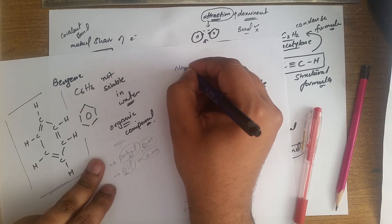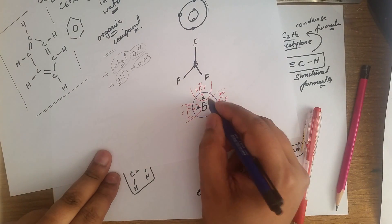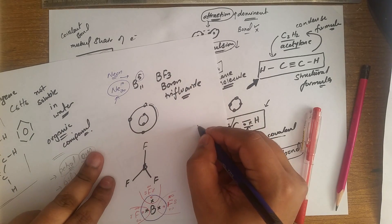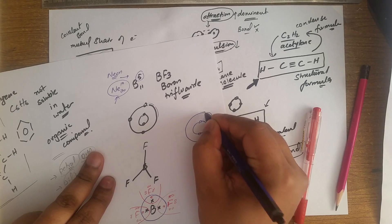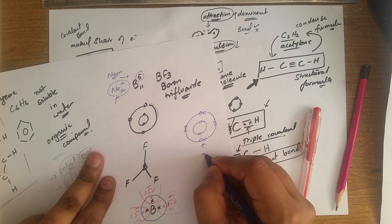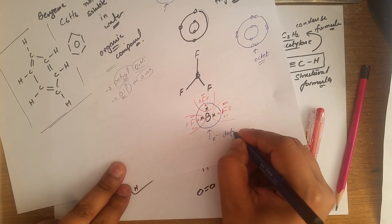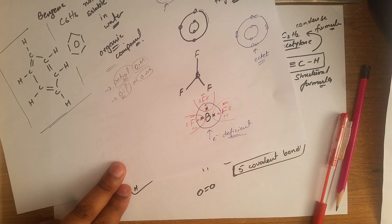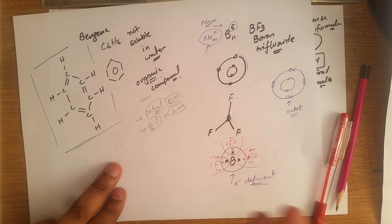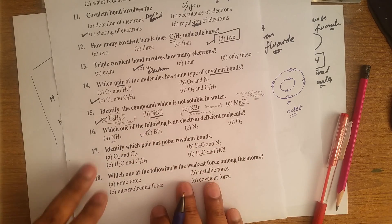Neon is the 10th element of the periodic table, with 10 electrons — 2 in the first shell and 8 in the outer shell. Boron tries to follow neon's octet but cannot. In contrast, ammonia (NH₃) is not electron deficient. BF₃ (boron trifluoride) is the electron deficient molecule in this MCQ.